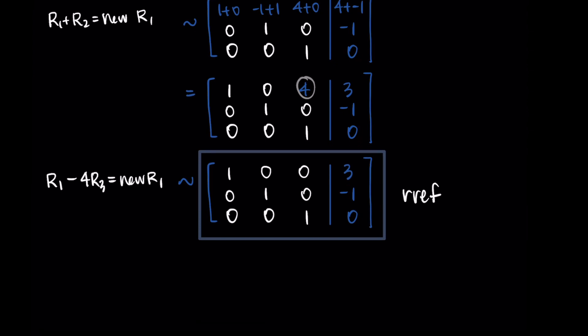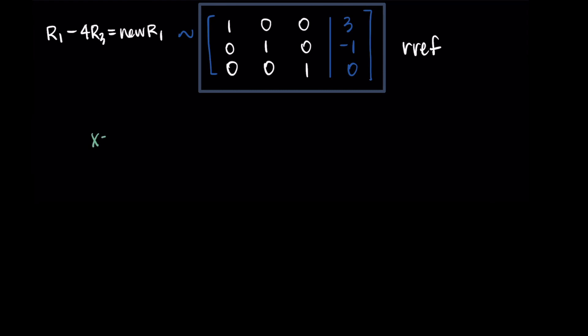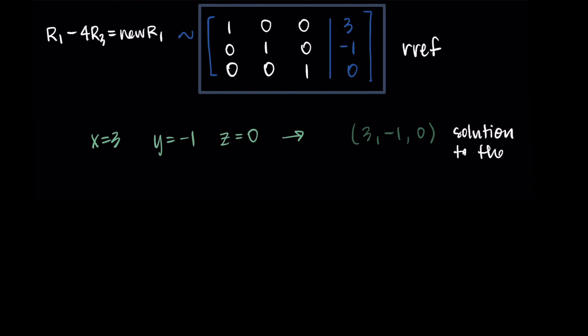From the reduced row echelon form we can read our solution: the first row gives x equals 3, the second row gives y equals negative 1, and the third row gives z equals 0. So our solution point is (3, negative 1, 0). Row reduction can take a lot of steps, and it's always a good idea to check your work with technology since mistakes are easy to make. Both examples here were independent systems with only one solution. In the next video we'll go through what happens with other types of systems. Thanks so much for watching!